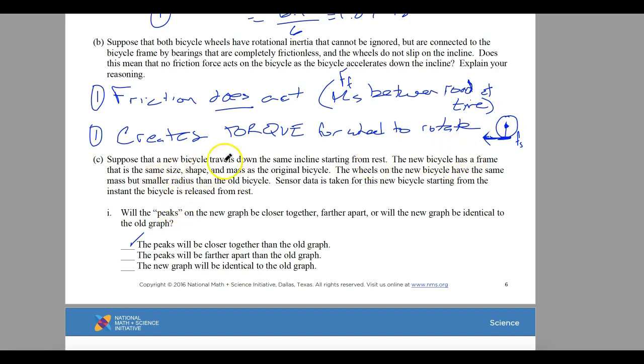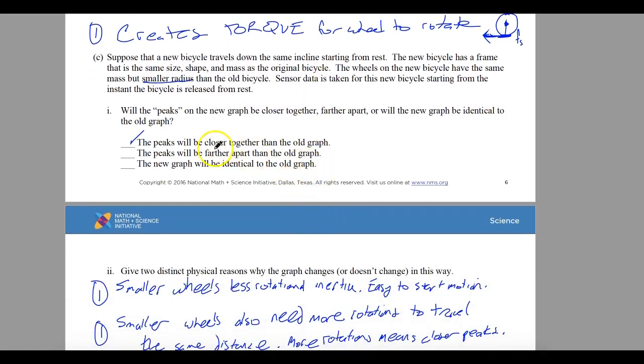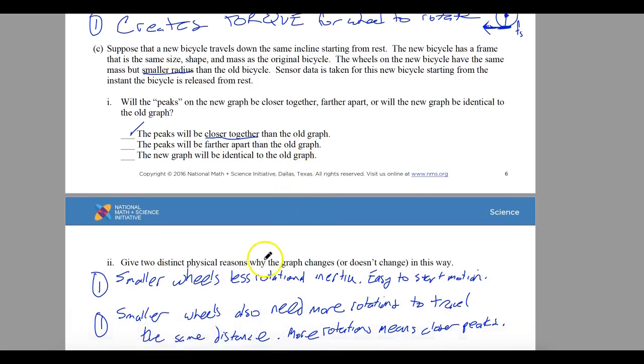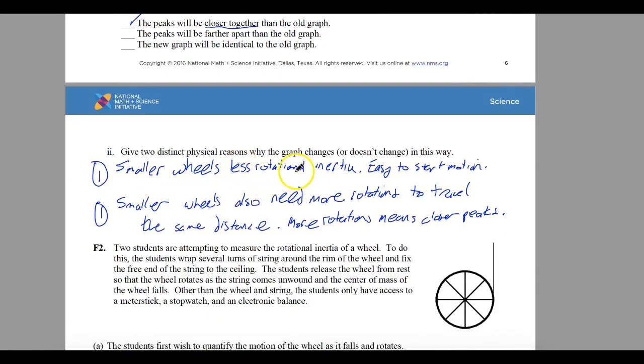For letter C, if you have the new bicycle, it's traveling the same incline from rest. It's a frame that is the same size and shape, but the wheels have the same mass but a smaller radius. Will the peaks be closer together or further apart? They should be closer together. They are closer together because the smaller wheels have less rotational inertia, and it's easier to get them to go. The smaller wheels also need more rotations in order to travel that same distance. So more rotations means that you have closer peaks.